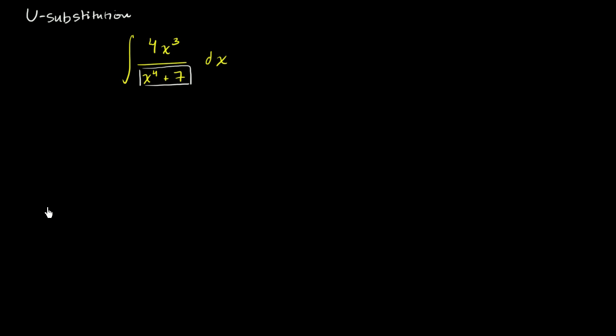So given that, what would you want to set your u equal to? And I'll let you think about that, because if you can figure out this part, then the rest will just boil down to a fairly straightforward integral. Well you want to set u equal to the expression that you have its derivative laying around. So we could set u equal to x to the fourth plus 7.